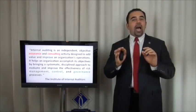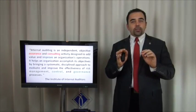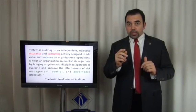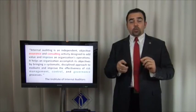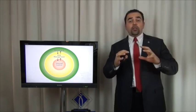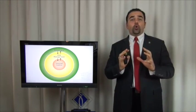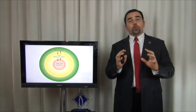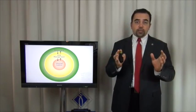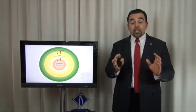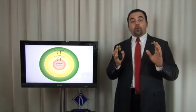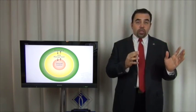The main discussion is about how we can provide assurance on the risk management process, the internal control process, and the governance process. The IIA says internal control is the core of operations and will help the organization achieve its objectives and manage risk. Risk management helps the organization manage risk, and governance helps the organization achieve its objectives.